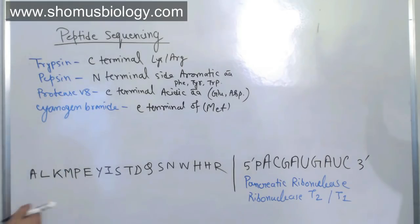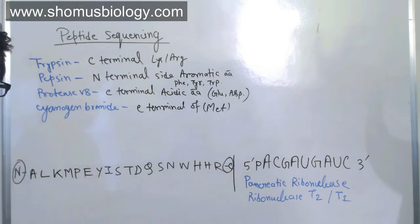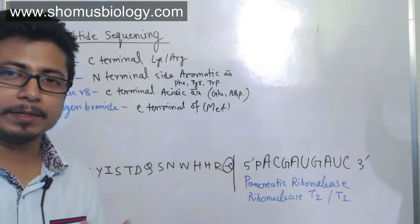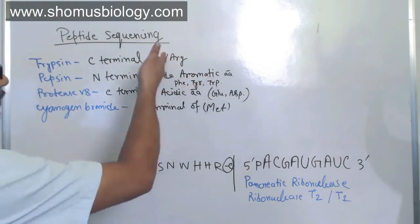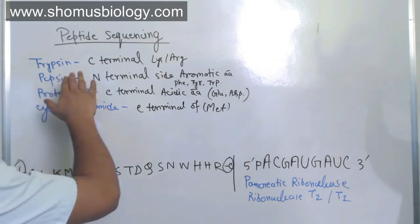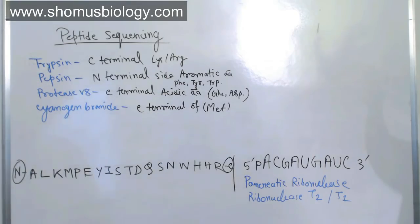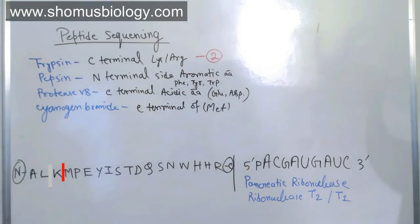When we say N-terminal or C-terminal side, the protein sequence always has an N-terminus and a C-terminus, so the direction matters — fragments will differ depending on which side is cleaved. Be careful: some people only look at the amino acid name but you must also focus on N or C terminal. Now applying trypsin to this polypeptide: trypsin cleaves the C-terminal side of lysine and arginine. There are two lysines in this sequence, so two cuts generate two fragments.